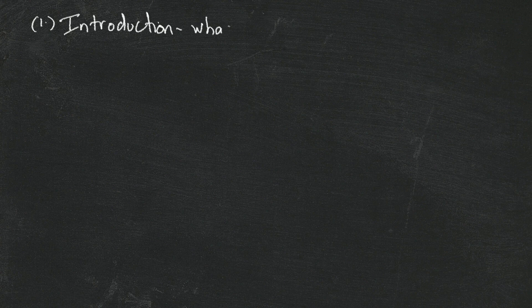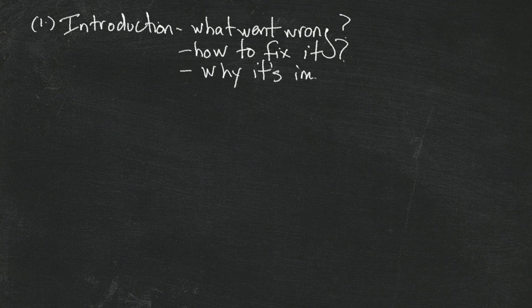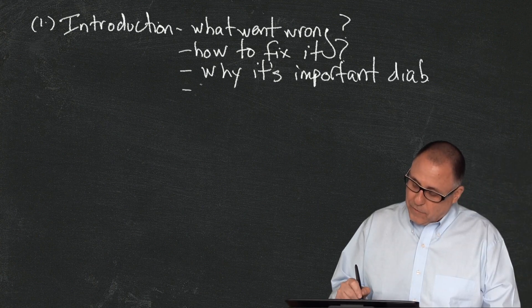Let's do an outline of what we're going to be talking about today. We're going to start off with an introduction, talk about what went wrong — or as I say in the field, pathophysiology — how to fix it, not how to make a cure because there is not a cure yet, but what it takes to manage it. We'll also talk about why it's important to manage type 1 diabetes, and we'll talk about family dynamics.